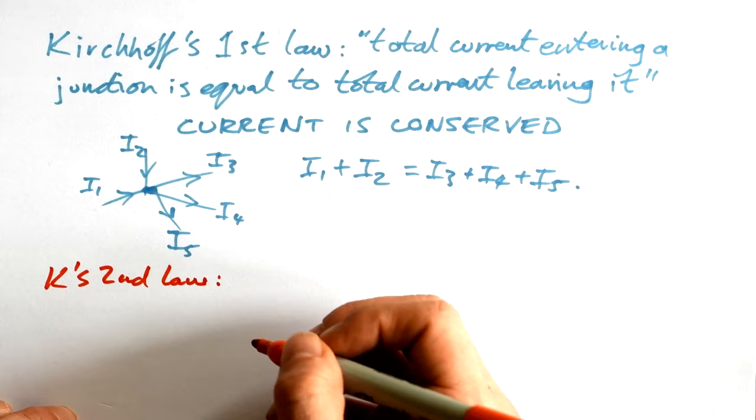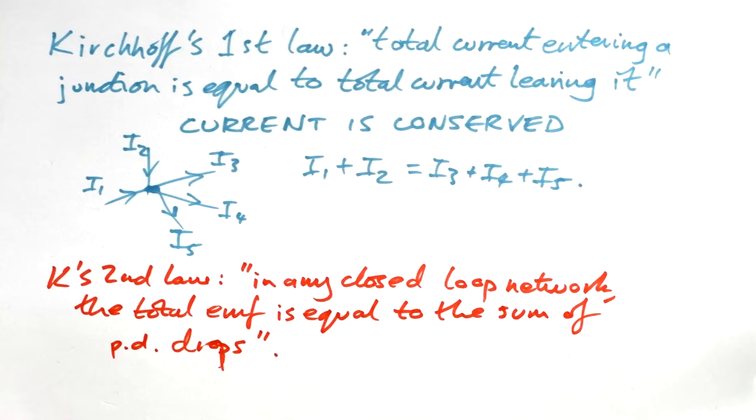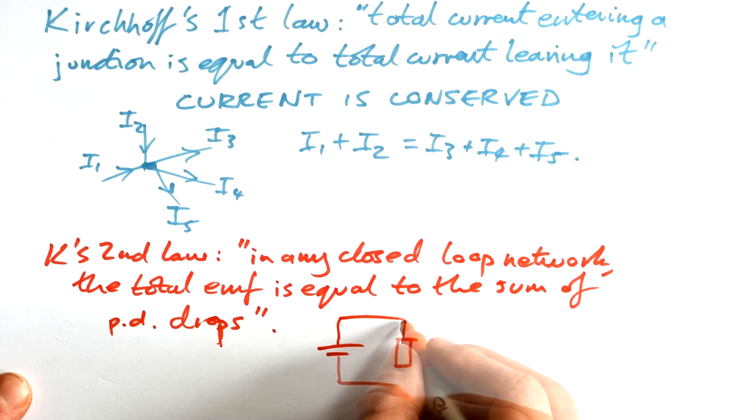Kirchhoff's second law is this: in any closed loop network, the total EMF is equal to the sum of PD drops. And we know that to be true just from when it comes to looking at one cell or battery and one resistor.